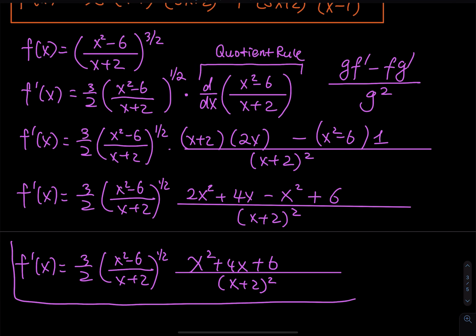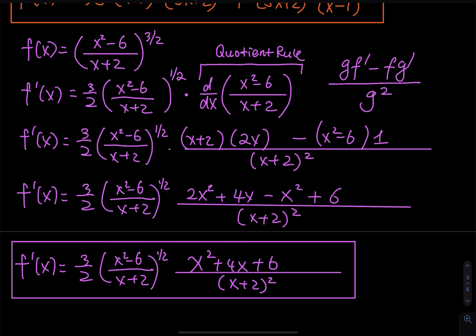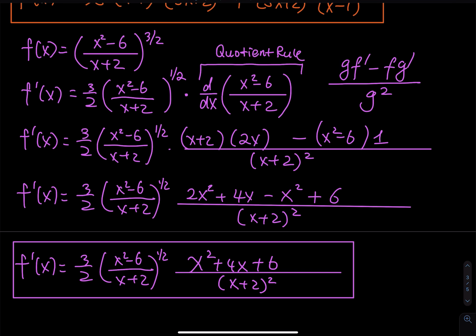There is no need to open up the 1/2 power and do any more simplification. So this is good enough. Whatever I have inside the box is perfect — there is no need to move on. So that's our third function. We have one more to go, and that function is a quotient rule as well.